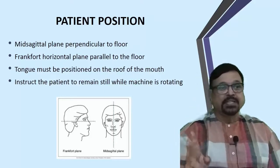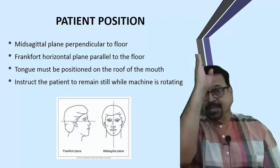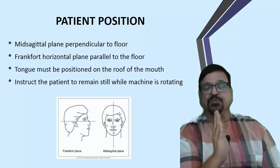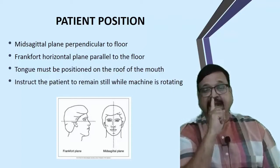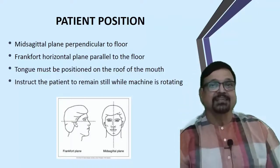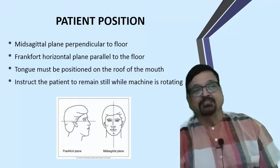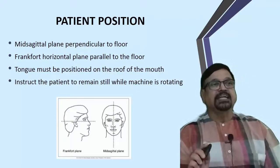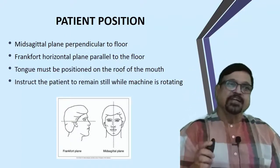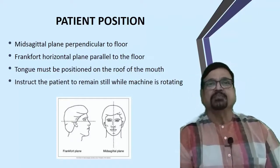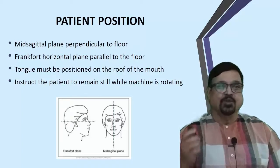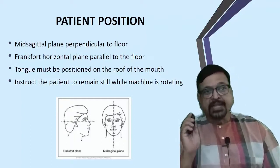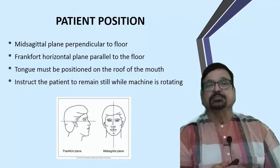There are two planes required for positioning. The first is the horizontal plane and the second is the midsagittal plane - a vertical plane. When positioning the patient in the machine, a collimated light falls on the patient's face and the reflection is seen in a mirror, confirming the midsagittal plane is correct. The second is the Frankfurt plane - a technician, positioned at the side, uses a collimated light to guide Frankfurt plane alignment. The midsagittal plane must be perpendicular and the Frankfurt plane must be parallel. The tongue must be positioned at the roof of the mouth for stability.